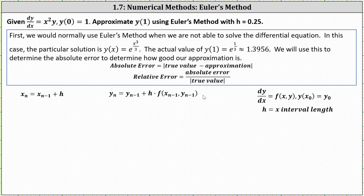To begin, we determine x sub 0 and y sub 0 from the initial condition. Because y of 0 is equal to 1, we know x sub 0 is equal to 0 and y sub 0 is equal to 1.